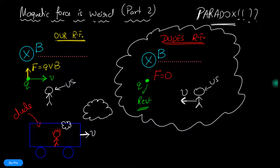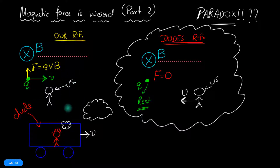Welcome to the second episode of Magnetic Forces. Here is a summary of what we saw last time. The problem was that the force on a charged particle due to the magnetic field depends upon reference frames. In our reference frame, the charge was moving with velocity V and it experiences a force QVB that makes it circulate and eventually hit that reference line.